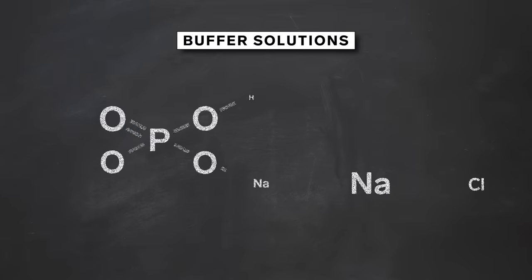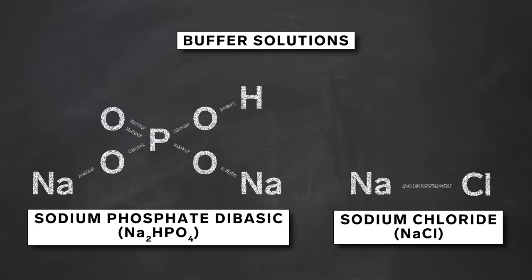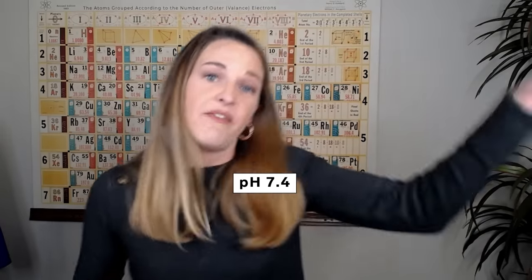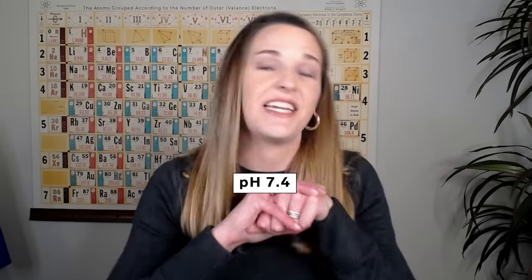And buffer solutions are resistant to big changes in pH. So if an acid comes along, the conjugate base is going to eat that up and keep it at a pH of 7.4. If a base comes in, the conjugate acid is going to eat that part up and again lock the pH in at 7.4.